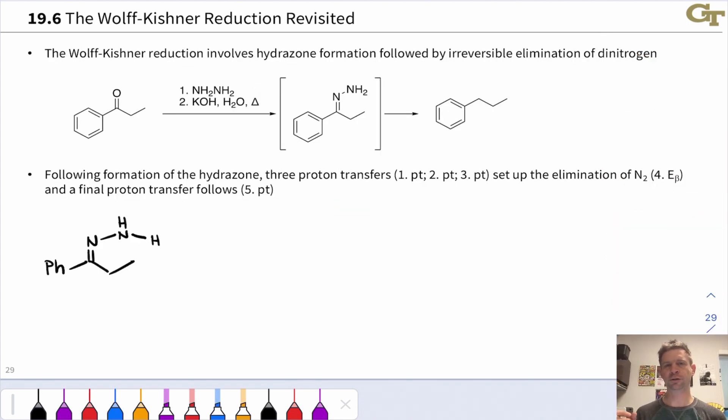Now is a good time to take a look at the Wolff-Kishner reduction again, which we'll recall involved the reduction of a CO double bond adjacent to an aromatic ring down to a CH2 group. So there are two hydrogens here where the carbonyl group was previously. This reaction involves a hydrazone intermediate and its structure is drawn right here. That condensation we looked at in the video on imine formation.